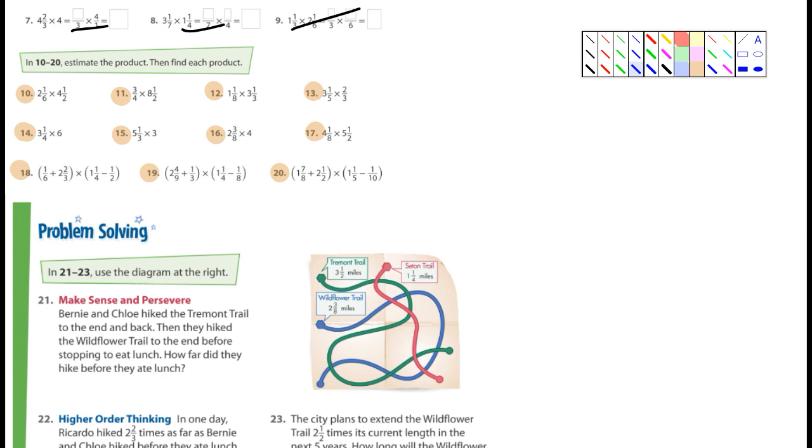So, in the estimation, 2 and 1/6 is pretty close to 2. 4 and 1 half, we could just leave that as 4 and 1 half. Well, what's 2 times 4? 2 times 4 is 8. What's 2 times 1 half? That's 1, so the estimation would be 9 for number 10.